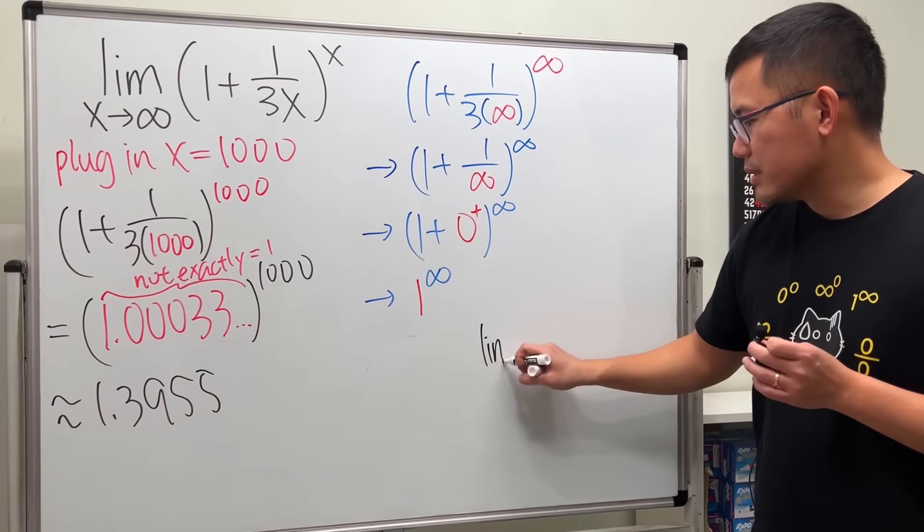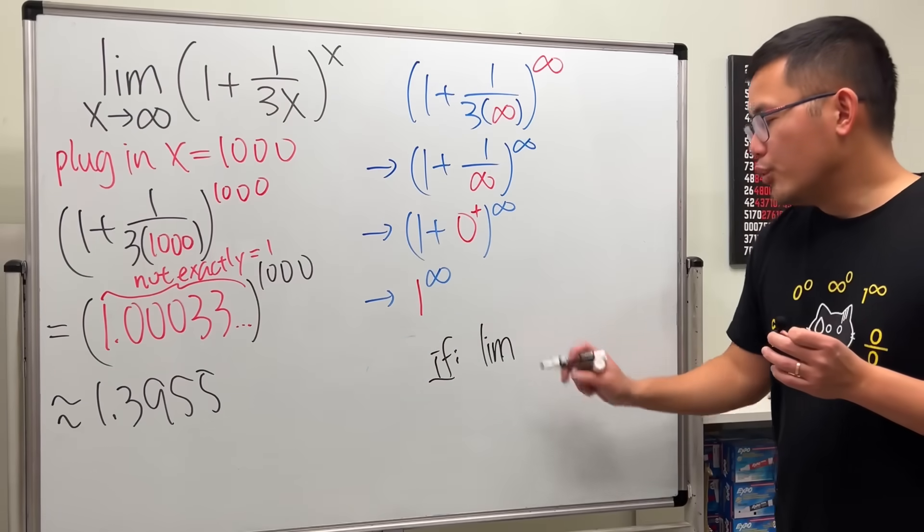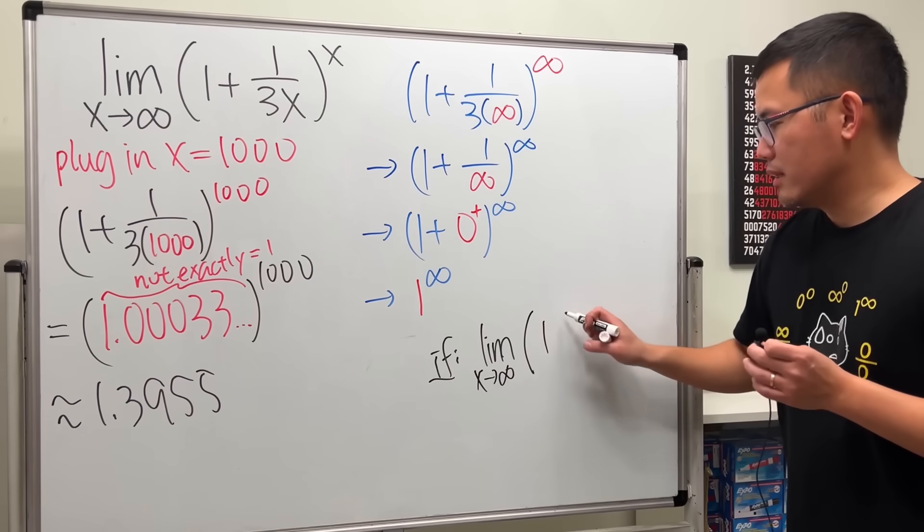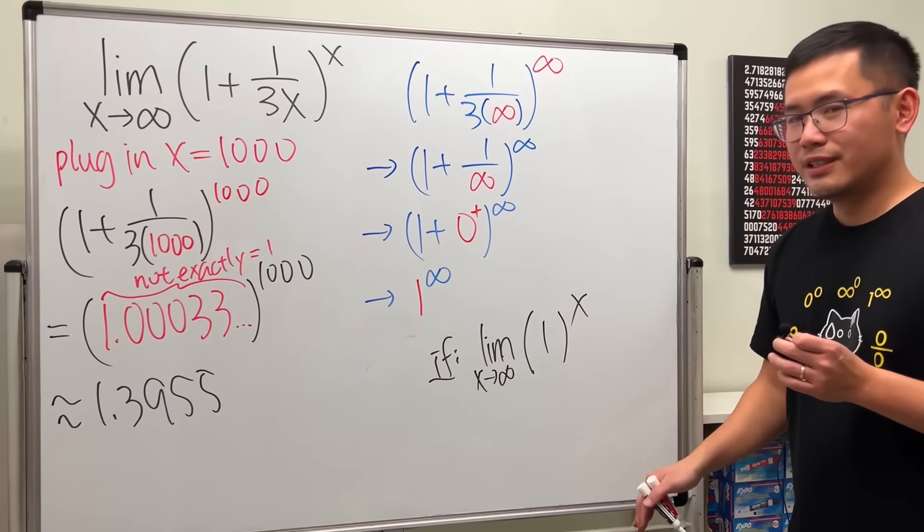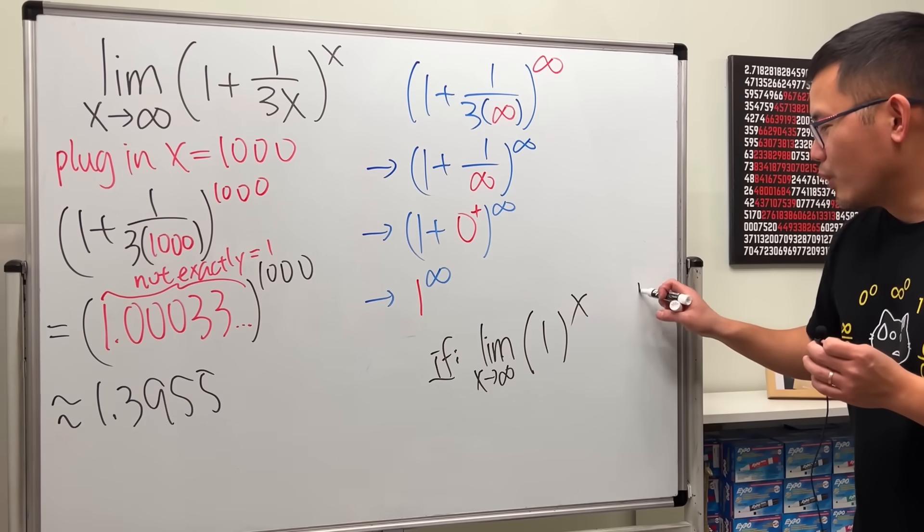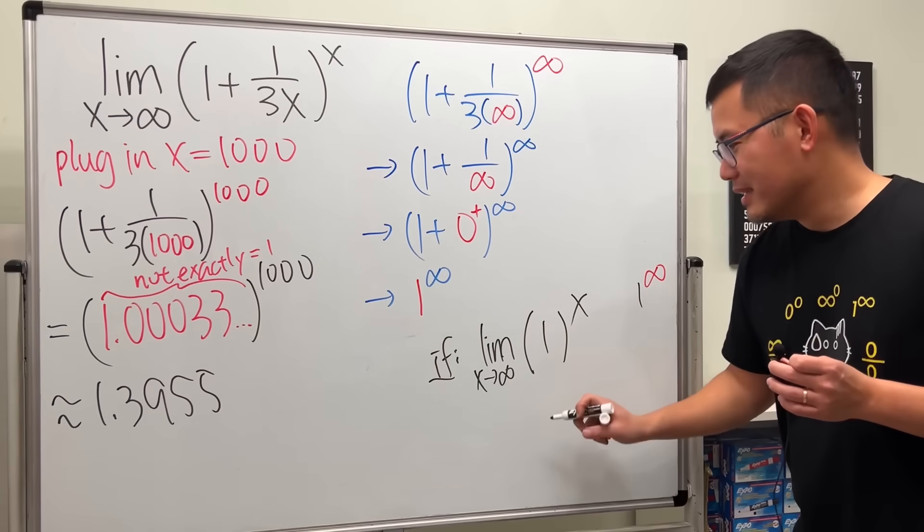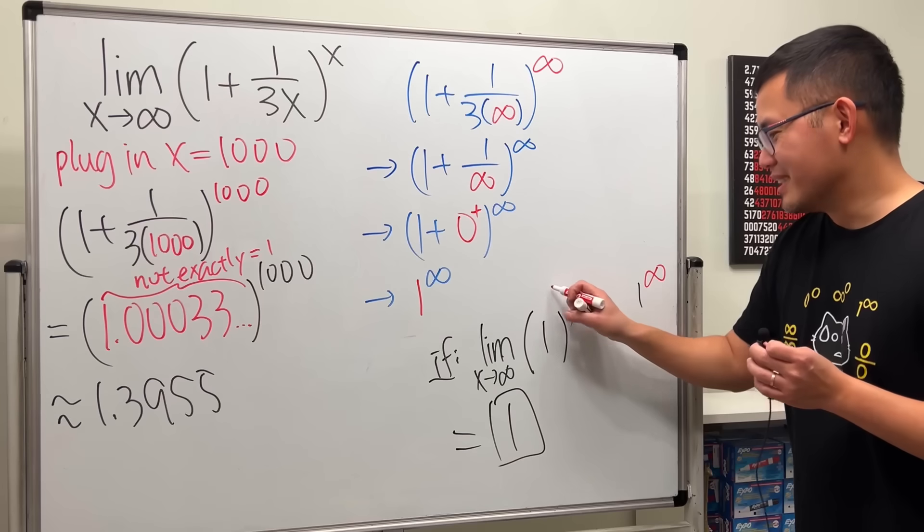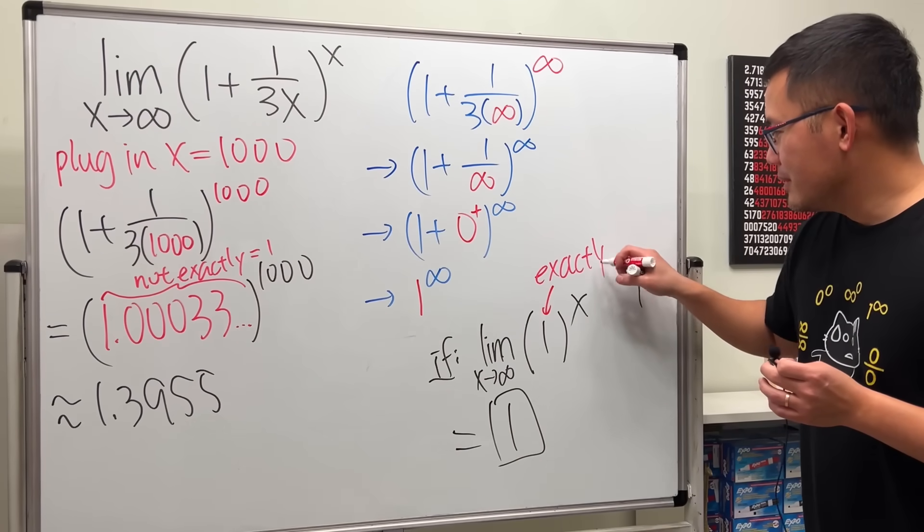Here's just a note. If you have a limit as x approaching infinity of 1 raised to the x power, just like this, nothing else, then yes, you put infinity here, you get 1 to the infinity's power. But the base is exactly equal to 1. So this is 1. No problem.